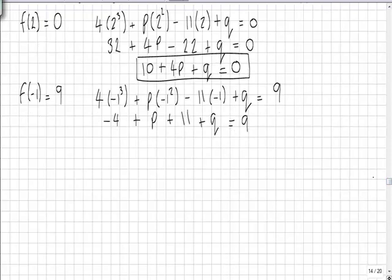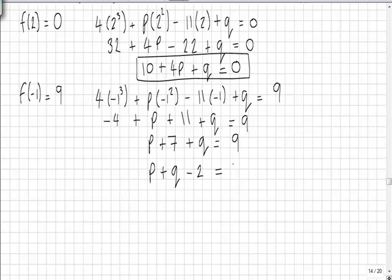Simplifying, we get p plus q plus 7 equals 9. Subtracting 7 from both sides, we have p plus q minus 2 equals 0.